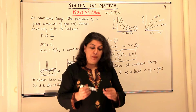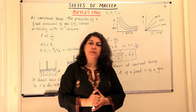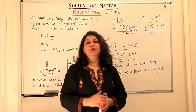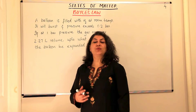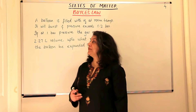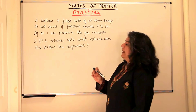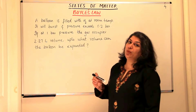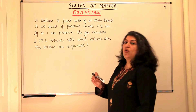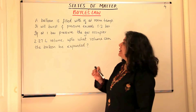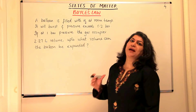Let us now solve a problem to make the concept clear. A balloon is filled with hydrogen at room temperature. It will burst if pressure exceeds 0.2 bar. If at 1 bar pressure the gas occupies 2.27 liters volume, up to what volume can the balloon be expanded?